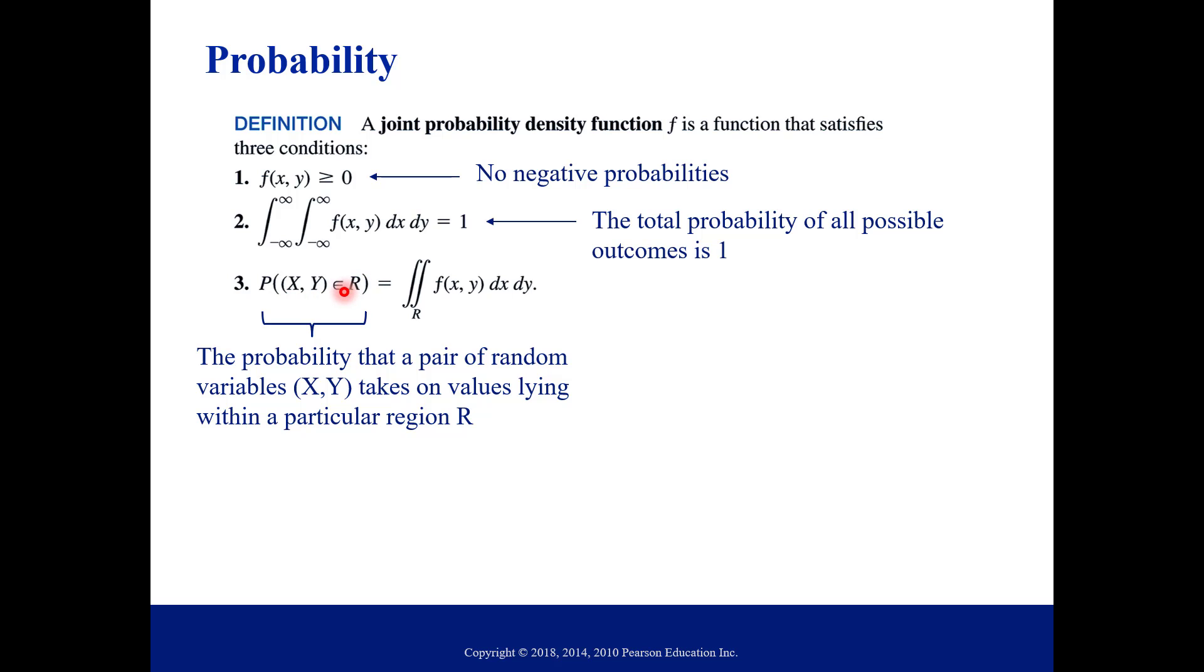We're going to call that region R. So if you know some stuff about probabilities, this might sound familiar, at least parts of this. If not, then just kind of think about if you're calculating probability, you're not going to say that there's a negative probability of something happening. And the most that something could ever happen is 1, 100%. And then this is our notation for finding if X and Y exist within a particular region, which we're calling R. So we're going to work this out real quick.